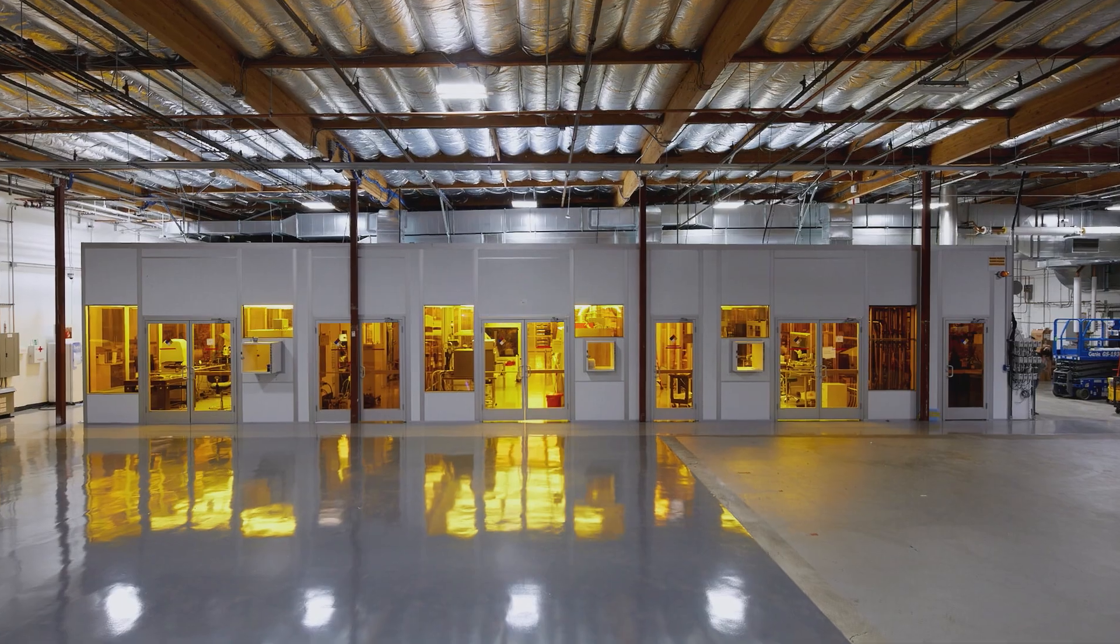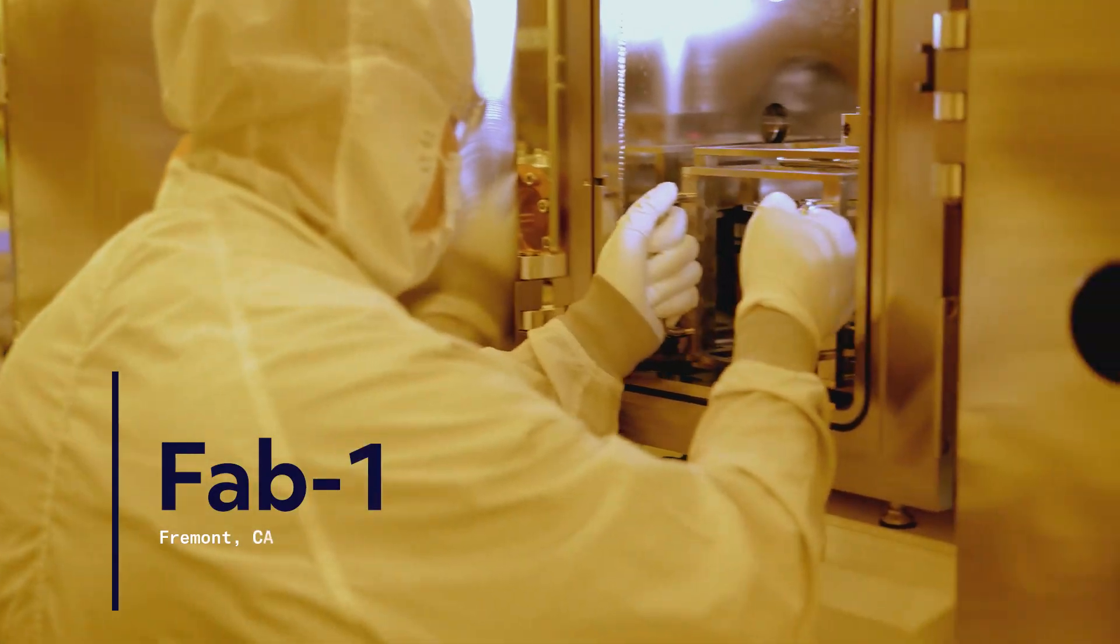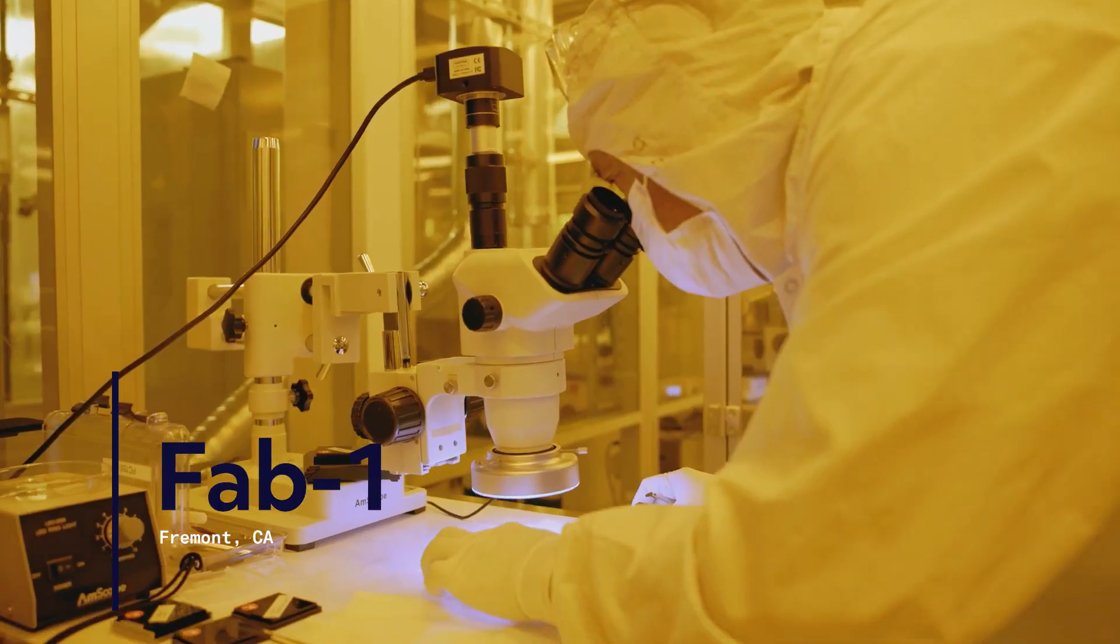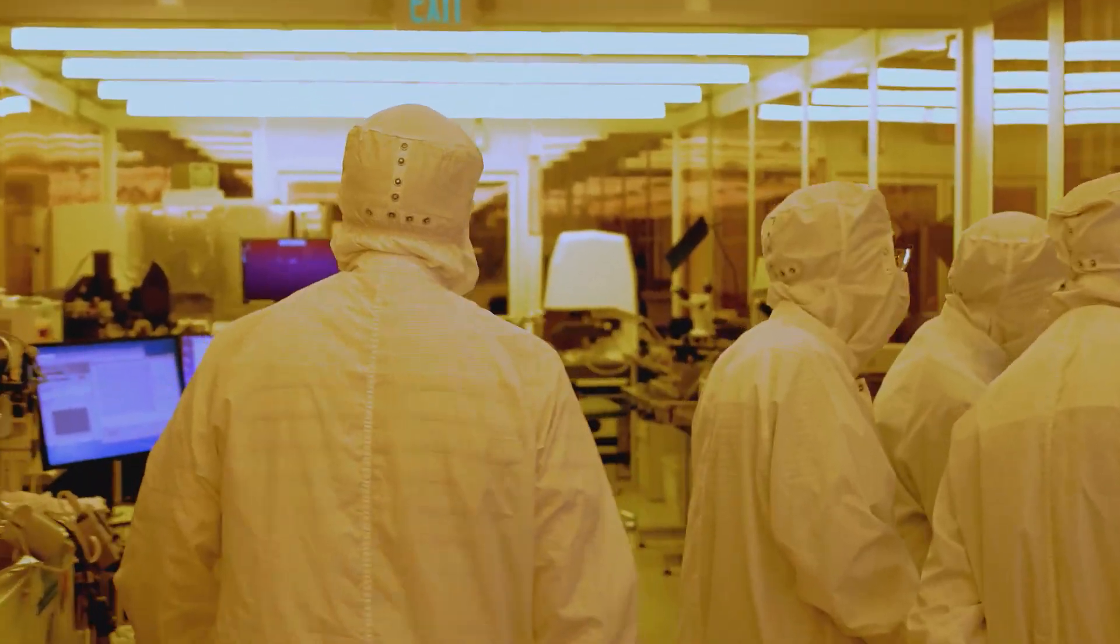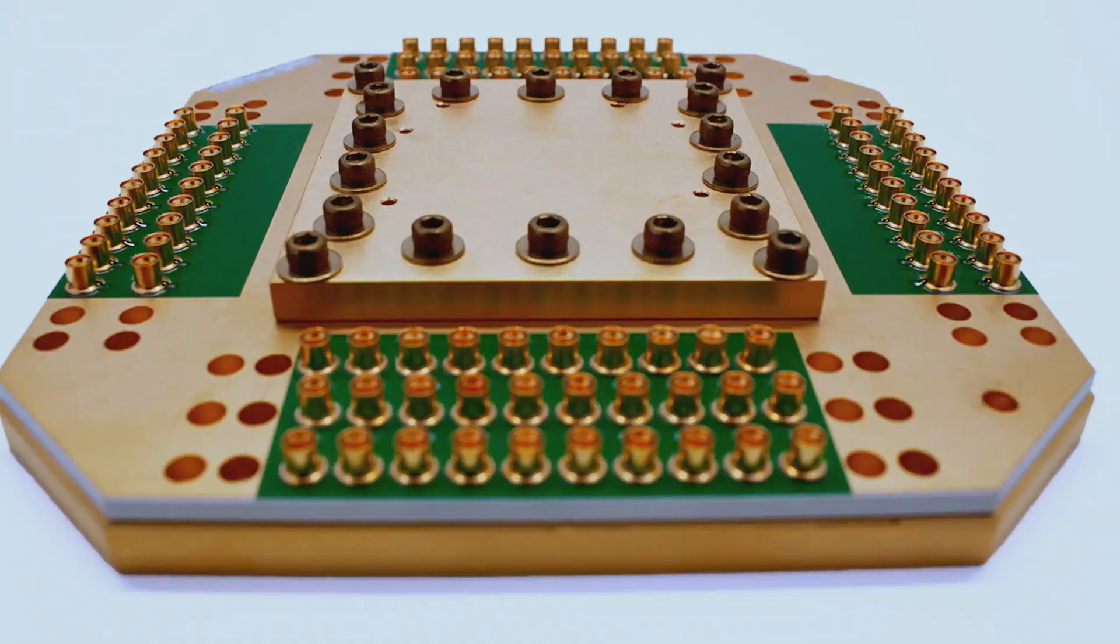One of the best decisions Rigetti made was to build its own quantum fab. Fab 1 is the world's first quantum integrated circuit foundry. We've pioneered a fundamentally new way to build quantum processors based on a multi-chip processor architecture.